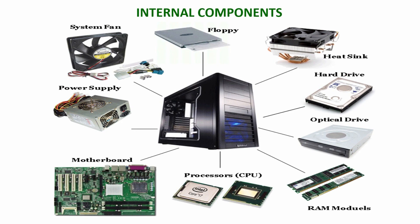The internal components of a computer's control unit contain many components inside it, including the motherboard, the processor, the RAM, optical drives, the hard drive, the heat sink, the floppy disk drive, the system fan, and the power supply. All these components are connected to the motherboard, either directly or through a PCI card. The processor and RAM are connected directly onto the motherboard. The hard drive and optical drive are connected via a cable called a SATA cable, or sometimes an IDE cable.